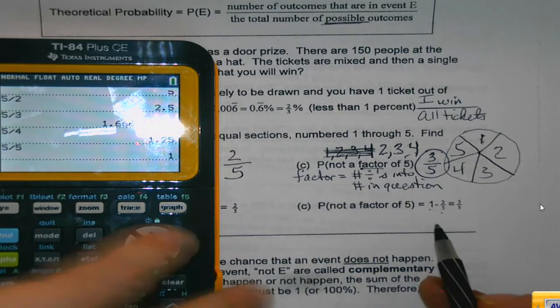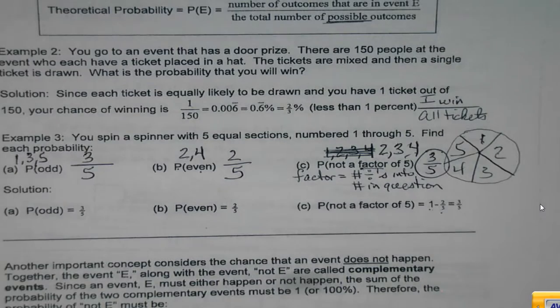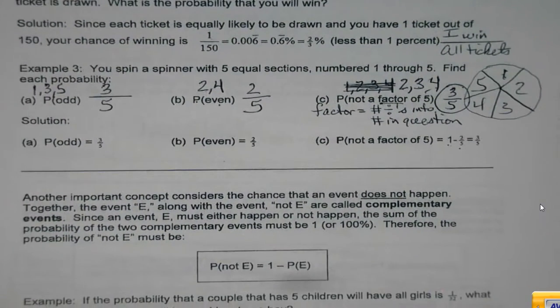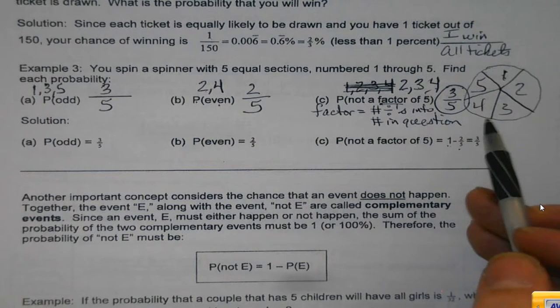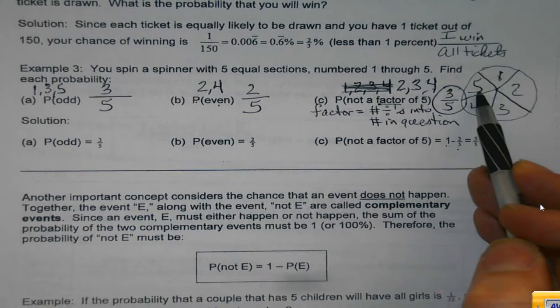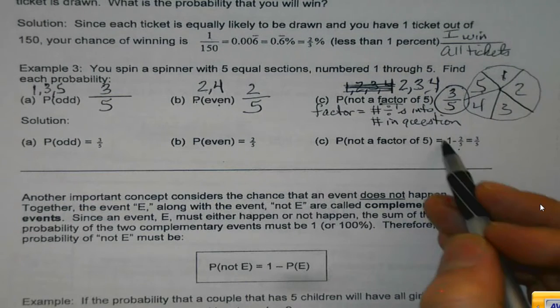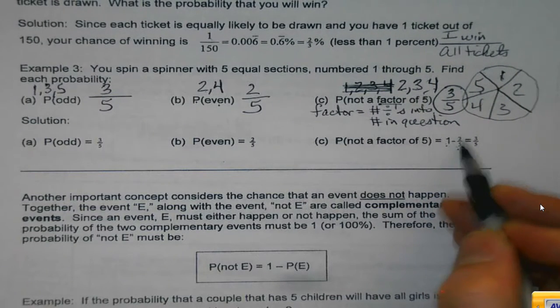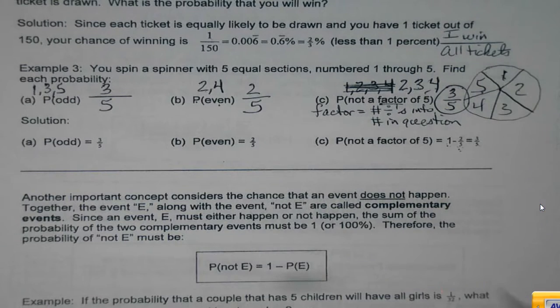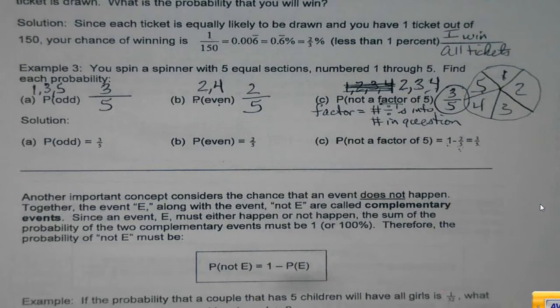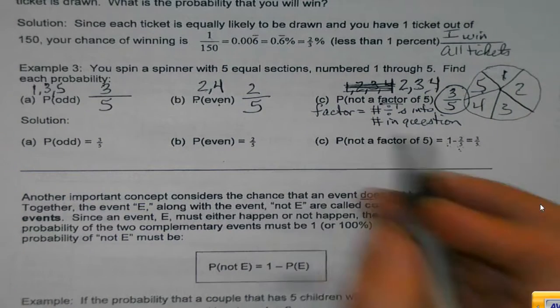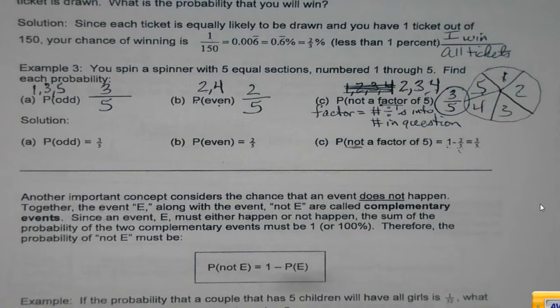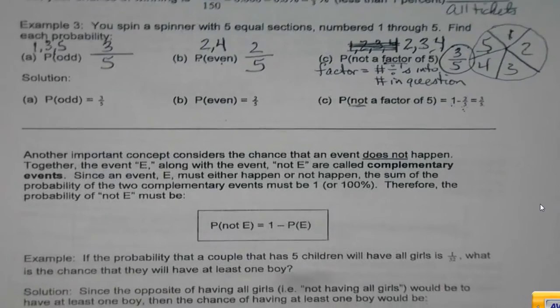Because what they decided to do is what we're introducing at the bottom of the page. You can find the probability of something not occurring by doing one minus the probability that it does. We found up here that there were two numbers, one and five, that were factors of five. So I can do one minus the probability of it occurring to get that, or I can just count up the things that don't work. They both are going to work for me. But if you see the word not, it just means the opposite of that happening.